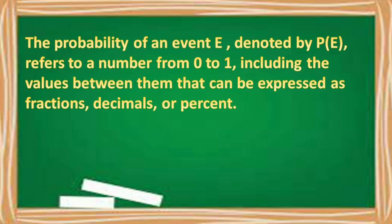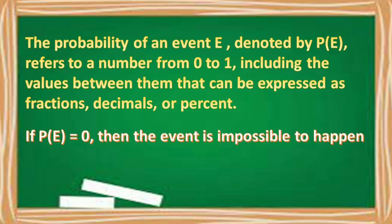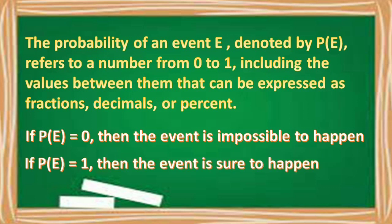The probability of an event, denoted by P(E), refers to a number from 0 to 1, including the values between them, that can be expressed as fractions, decimals, or percent. If the probability of an event is equal to 0, then the event is impossible to happen. And if the probability of an event is equal to 1, then the event is sure to happen, or it is 100% sure to happen.